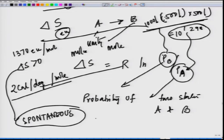Positive entropy favors the reaction to happen. Heat energy causes a random commotion of molecules, because the transfer of heat from an enclosed system to the surrounding increases the number of different arrangements that molecules in the outside world can have — it increases their entropy. It can be shown that the release of a fixed quantity of heat energy has a greater disordering effect at low temperature than at high temperature.